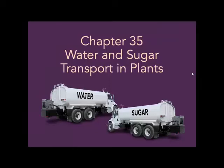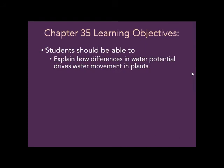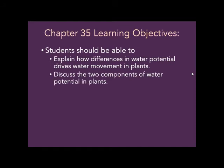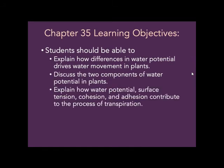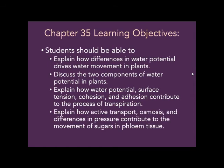Welcome to Chapter 35: Water and Sugar Transport in Plants. By the end of this chapter, you should be able to explain how differences in water potential drive how water moves in plants, discuss the two components of water potential in plants, explain how water potential, surface tension, cohesion, and adhesion contribute to the process of transpiration, and explain how active transport, osmosis, and differences in pressure contribute to the movement of sugars in phloem tissue.